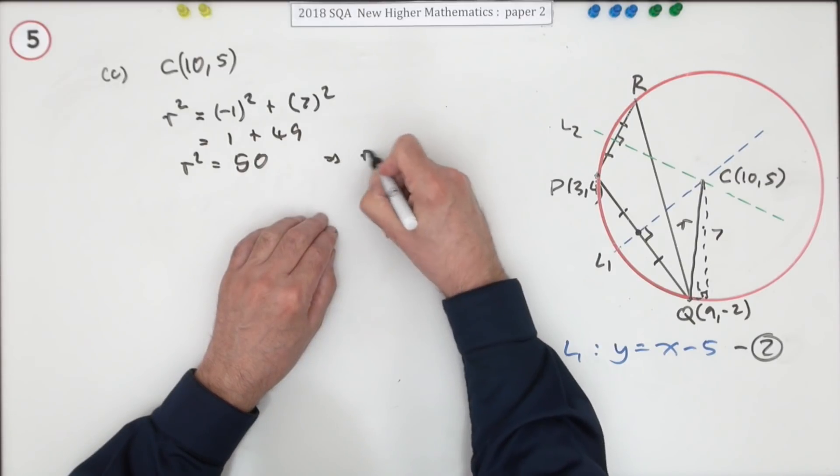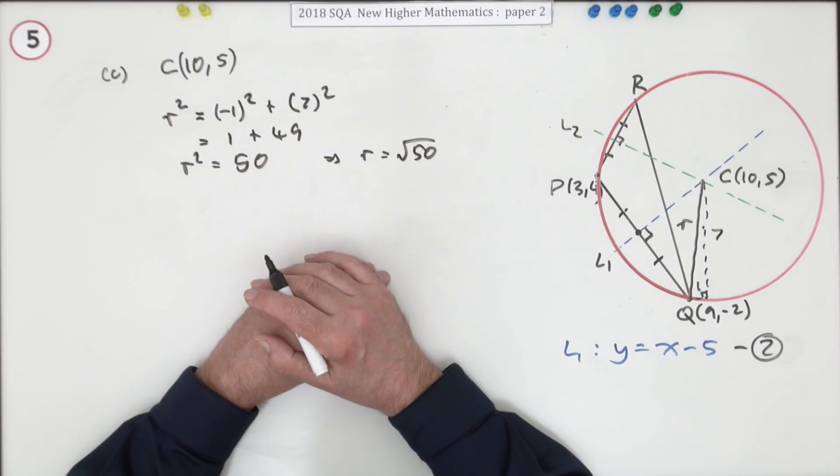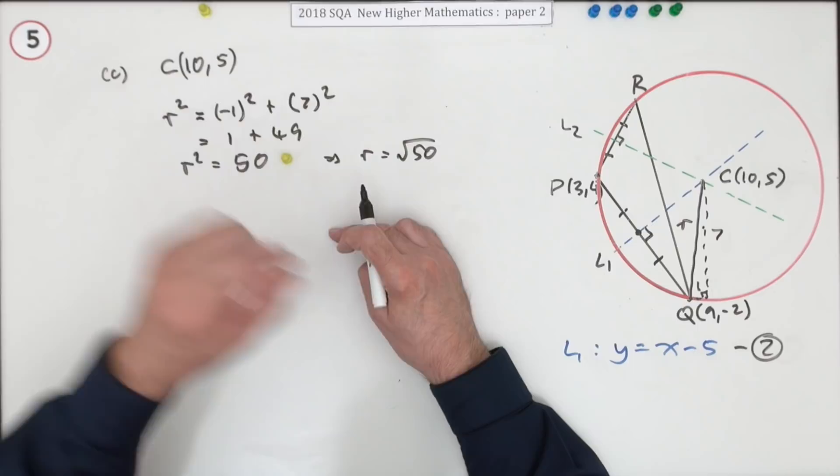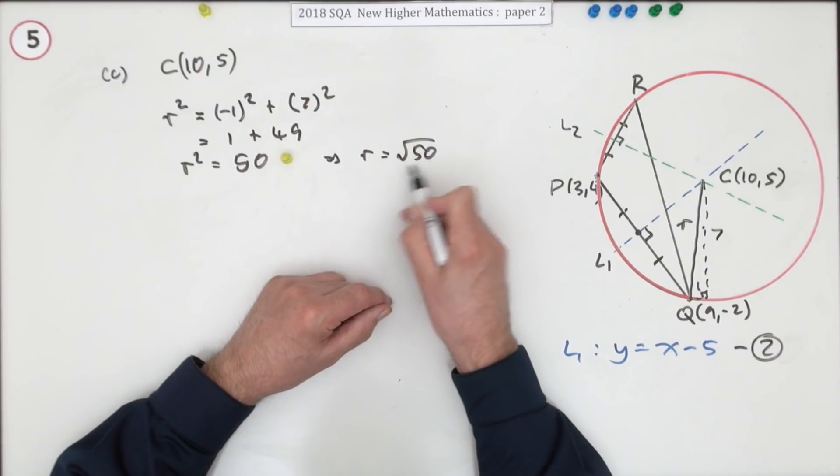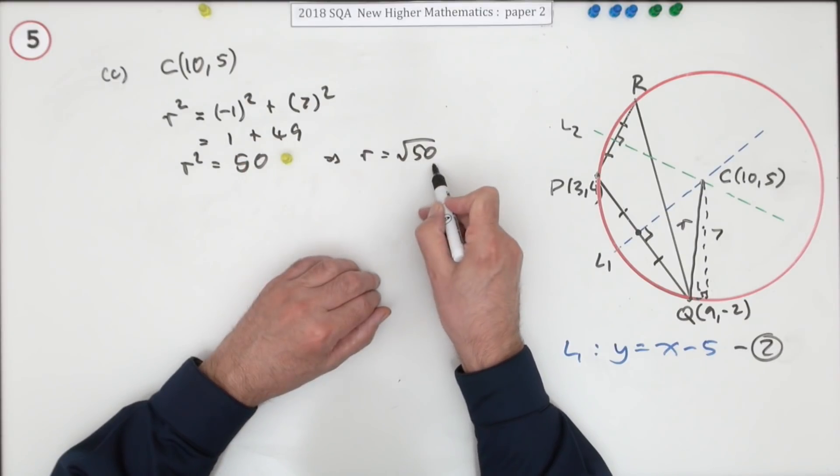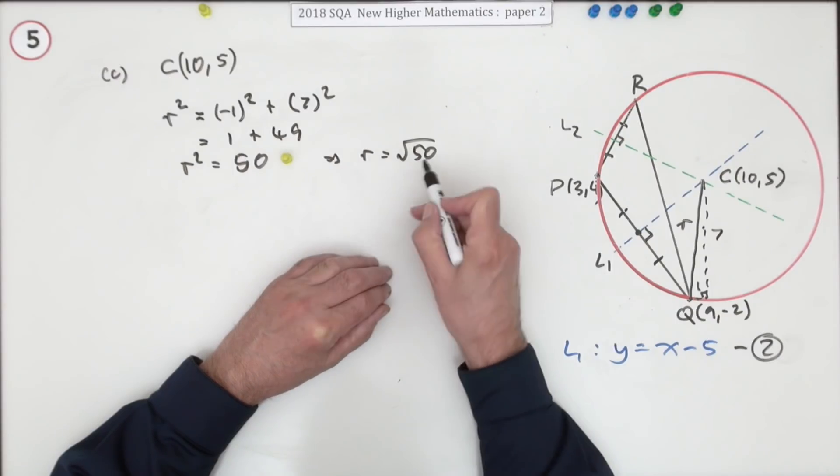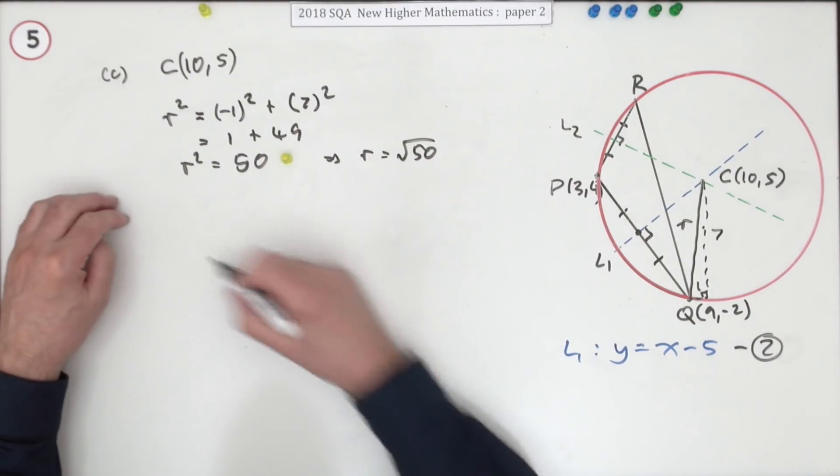If you want you could put it aside. That means r is root 50. And certainly in the marking scheme it gives the mark for root 50. But I'm pretty sure r squared is 50 would get the mark. Because even that root 50, if it was meant to be an answer, I didn't ask for it. But if they'd asked for the radius, root 50 wouldn't have been acceptable because it's not simplified. That's 25 times 2, so that's actually 5 root 2. So I'm taking that as the answer.